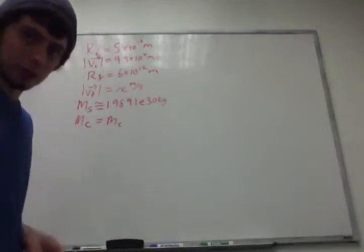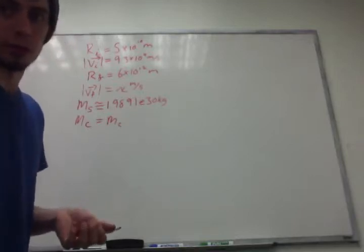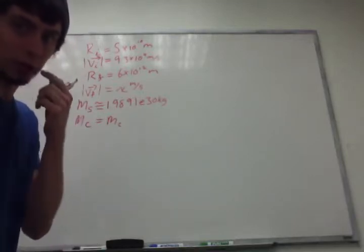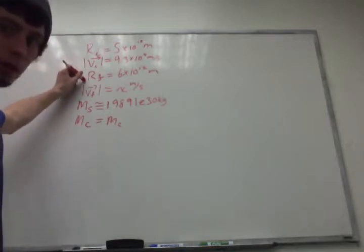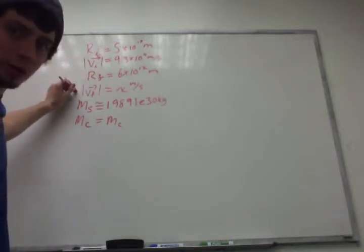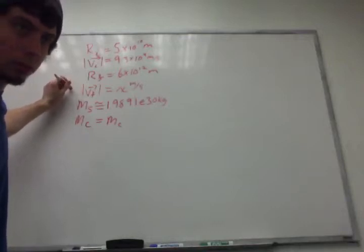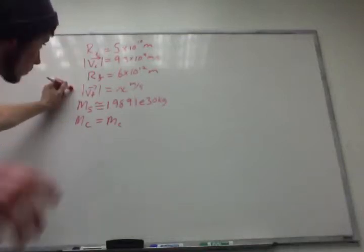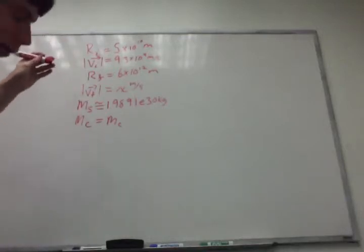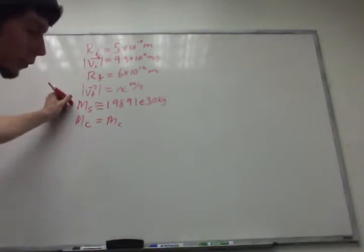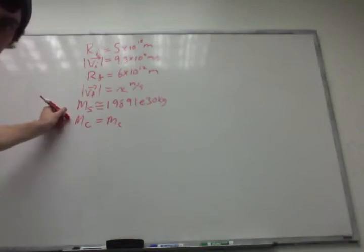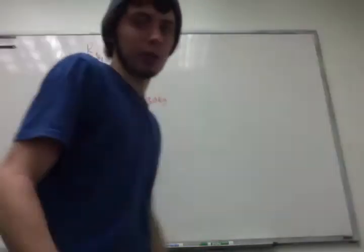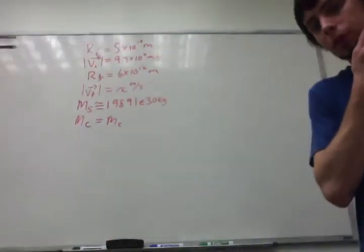The final position is going to be the farthest distance the comet gets from the sun, and the radius at that corresponding point is here. We're looking for the final velocity at that point. Another thing to take into consideration, the mass of the sun I approximated to this value here, and the comet's mass, which is going to cancel out, so that's why I didn't plug it in.